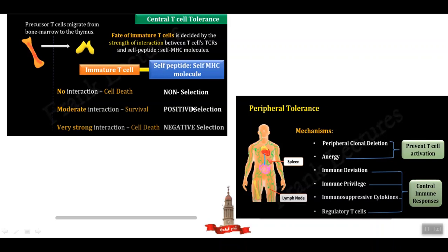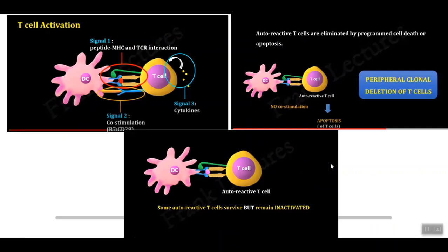If auto-reactive T lymphocytes escape central tolerance, they encounter peripheral tolerance mechanisms in the spleen and lymph nodes. Multiple mechanisms control these cells: peripheral clonal deletion, anergy, immune deviation, immune privilege, immunosuppressive cytokines, and regulatory T cells. We will focus briefly on peripheral clonal deletion and anergy.